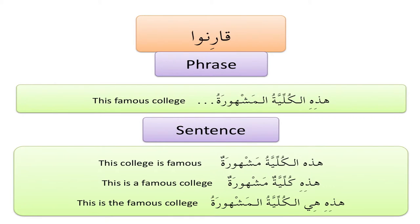Now compare these. We're introducing a demonstrative pronoun before phrases or sentences to see the combinations we can make. Look at the first one, which is a phrase: هَذِهِ الْكُلِّيَّةُ الْمَشْهُورَةُ — this is not a full sentence; you're saying 'this famous college.' Whereas in the examples below, we have a sentence instead: هَذِهِ الْكُلِّيَّةُ مَشْهُورَةٌ — there's disagreement in definiteness between الكُلِّيَّةُ and مَشْهُورَةٌ, and we're saying 'this college is famous.'